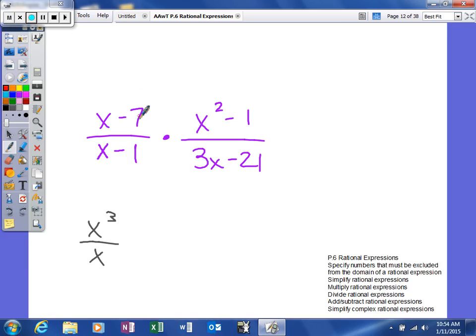Right here, there's no common factor. It's a linear binomial, so I can't factor this. However, this is quadratic, so I can factor this. We'll factor to (x+1)(x-1) - difference of squares. In our denominator, this is a linear binomial, but it does have a common factor. So we'll factor to 3(x-7).